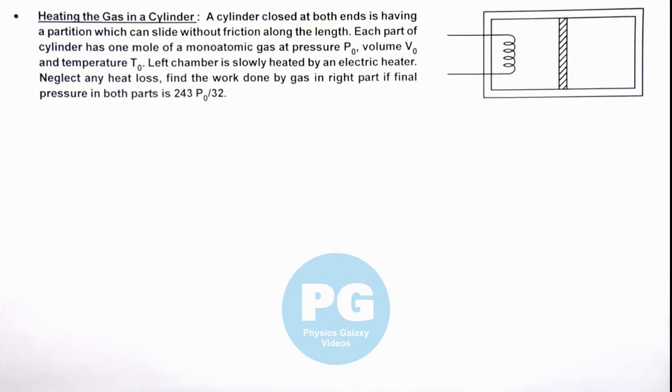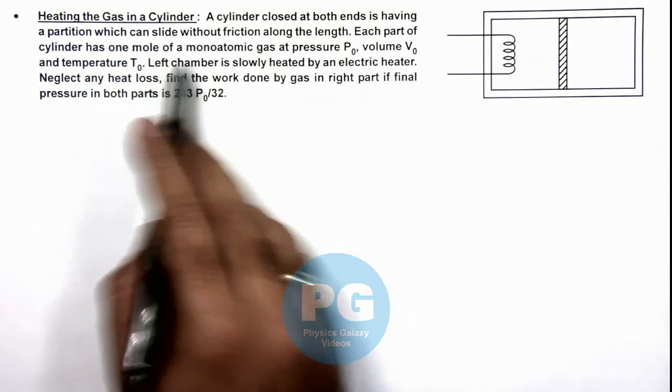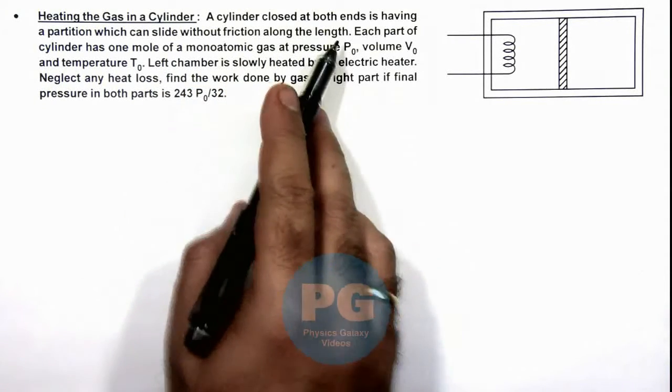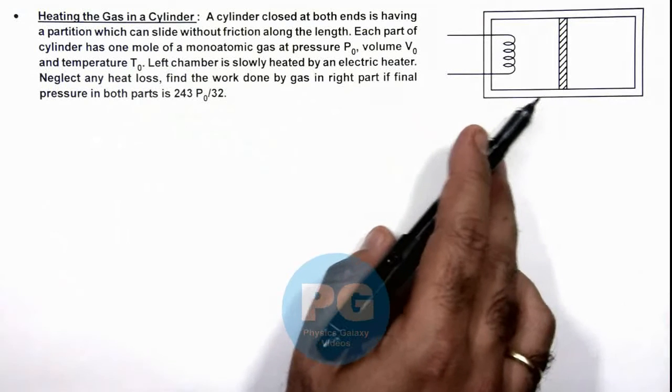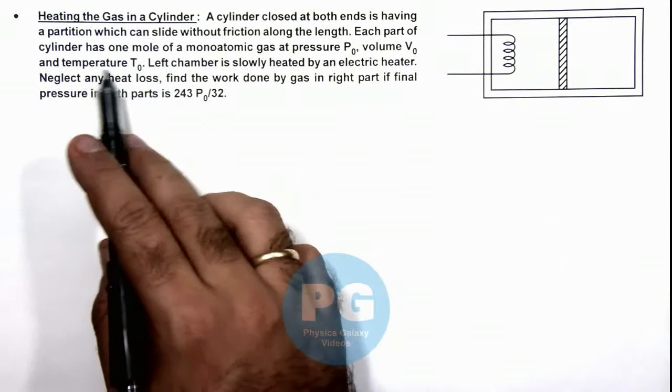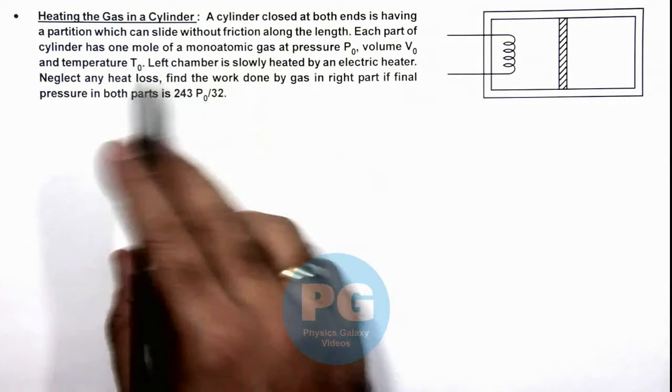In this illustration we'll analyze the heating of a gas in a cylinder. We are given that a cylinder is closed at both ends having a partition which can slide without friction along the length, and each part of cylinder has 1 mole of a monoatomic gas at pressure p_not, volume v_not, and temperature t_not.